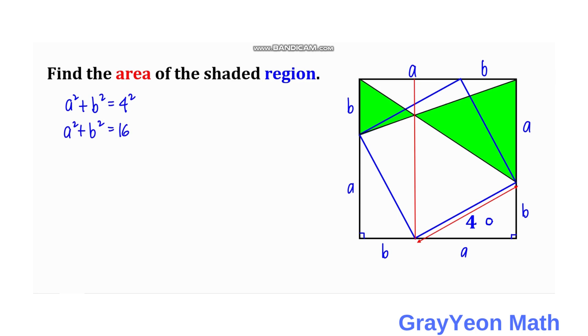And now for the area of this green region, the area is equal to one half times the base, which is b, times the height which is b. And for the larger green triangle, the base is actually a and the height is a, so we have one half times a times a.